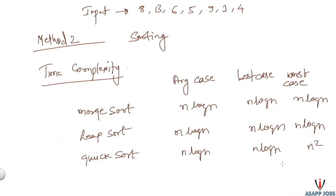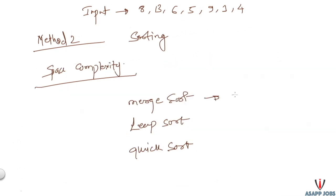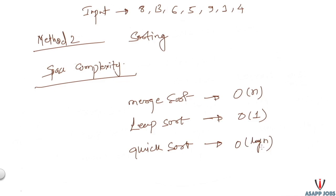Let's see the time complexity. Merge sort takes O(n log n) in all cases. Heap sort also takes O(n log n) in all cases. For quick sort, it is O(n log n) for average and best case, but O(n²) in the worst case. For space complexity: merge sort is O(n), heap sort is O(1) constant, and quick sort takes O(log n) for average and best case due to recursive call stack, and O(n) in the worst case.